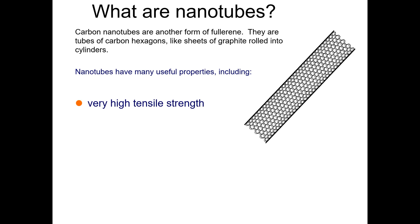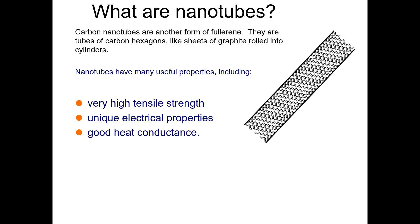Nanotubes have many useful properties. These nanotubes have remarkable properties. Among those properties, they have very high tensile strength. They also have unique electrical properties - they can be semiconducting depending upon the helicity or the diameter. Along with the change in diameter, you can easily switch the properties of the carbon nanotubes.